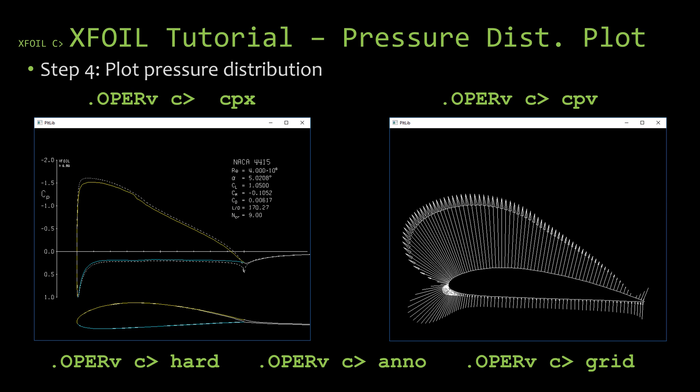So similarly to the inviscid analysis, you'll notice that as you prescribe the coefficient of lift, X-FOIL will generate the pressure distribution plot automatically and open it up in a new window for you. With the default shown here to the left of the slide. So this slide should look really familiar if you watched the last tutorial. The only difference is that you'll see that there is some more information contained in these plots, since this is the viscous analysis.